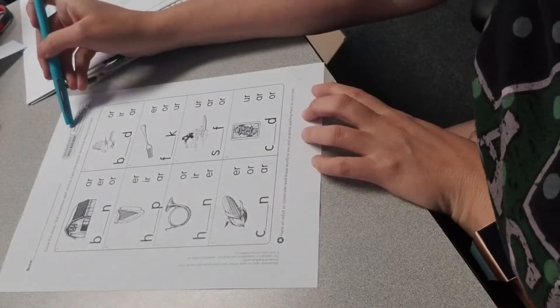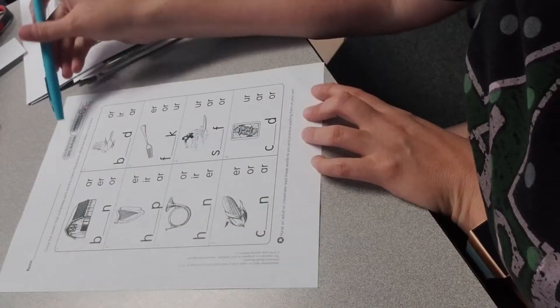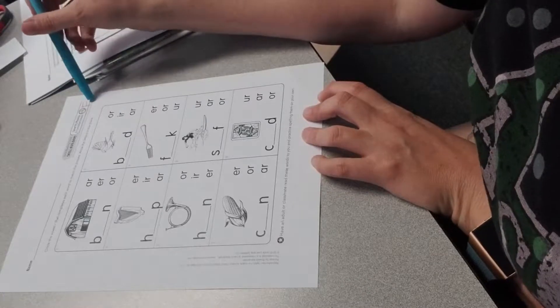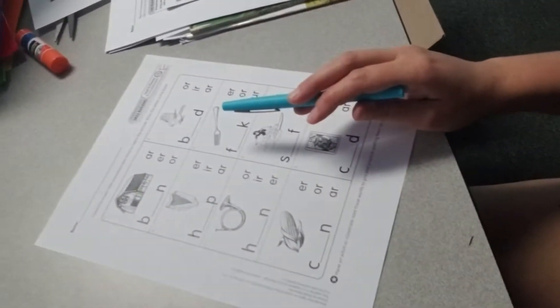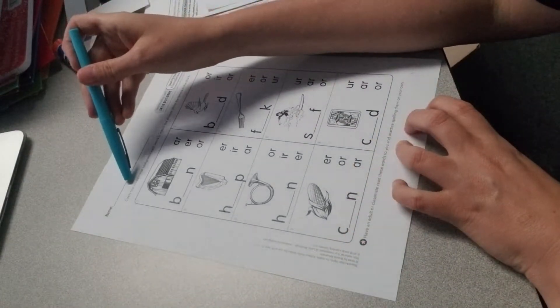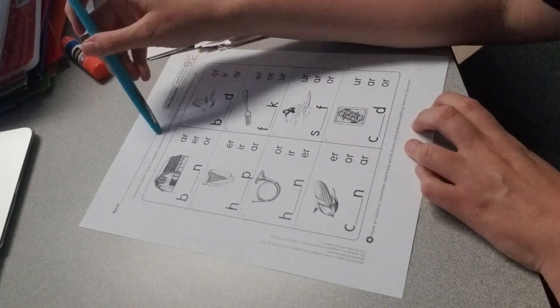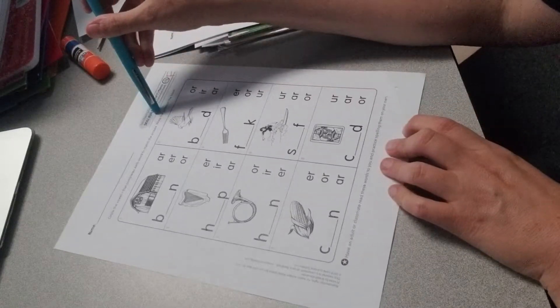All right scholars, we are on level nine phonics R-controlled vowels. This is sheet F. You're going to circle the vowel R that completes each word to match the picture and then write the letters in the blank.